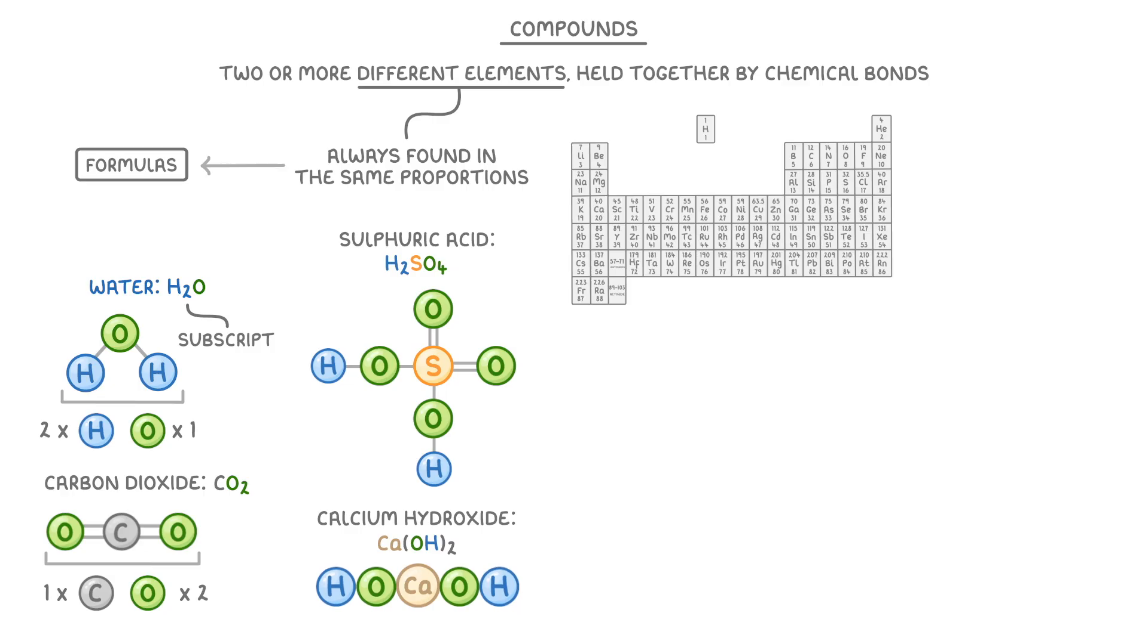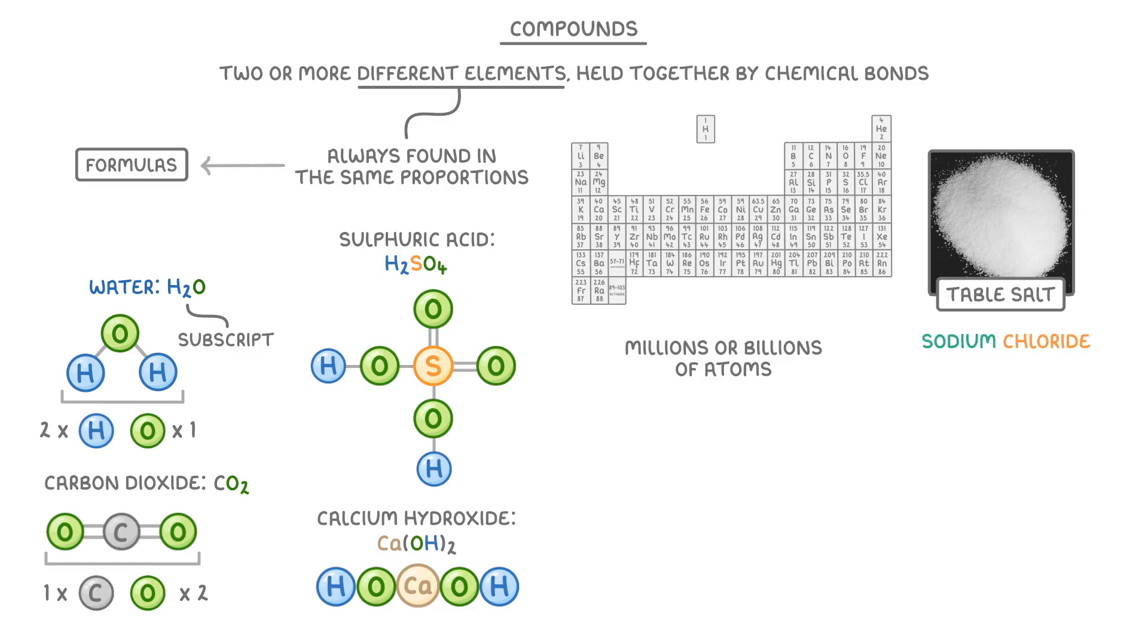The compounds we've seen so far have all been relatively small, containing just a few atoms. Some compounds though can contain millions or billions of atoms. For example, common table salt is actually a compound called sodium chloride, which has the formula NaCl.